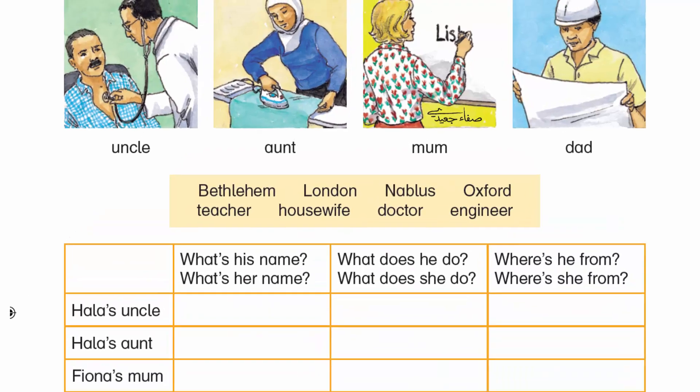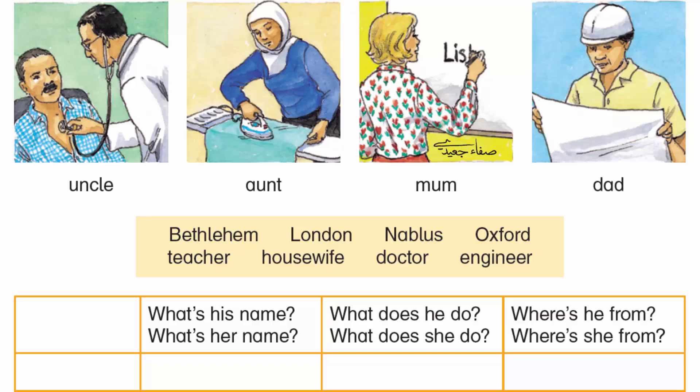Activity 2. Listen and say. Hala: What's your uncle's name? What does he do? Where's he from? Hala: What's your aunt's name? What does she do? Where's she from?